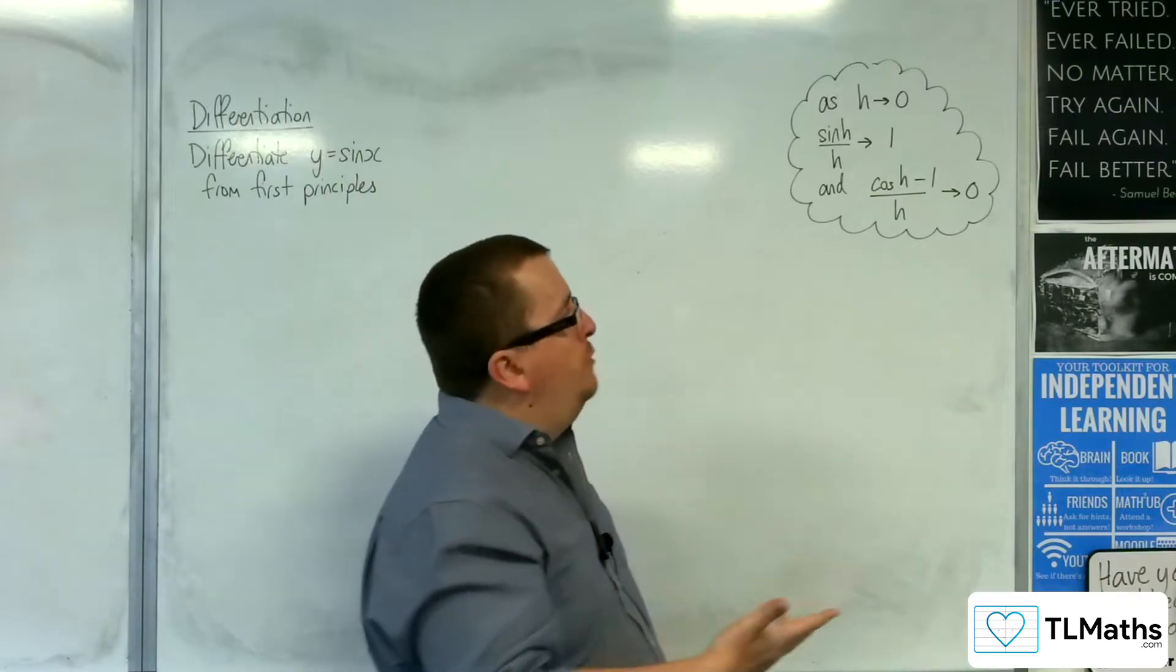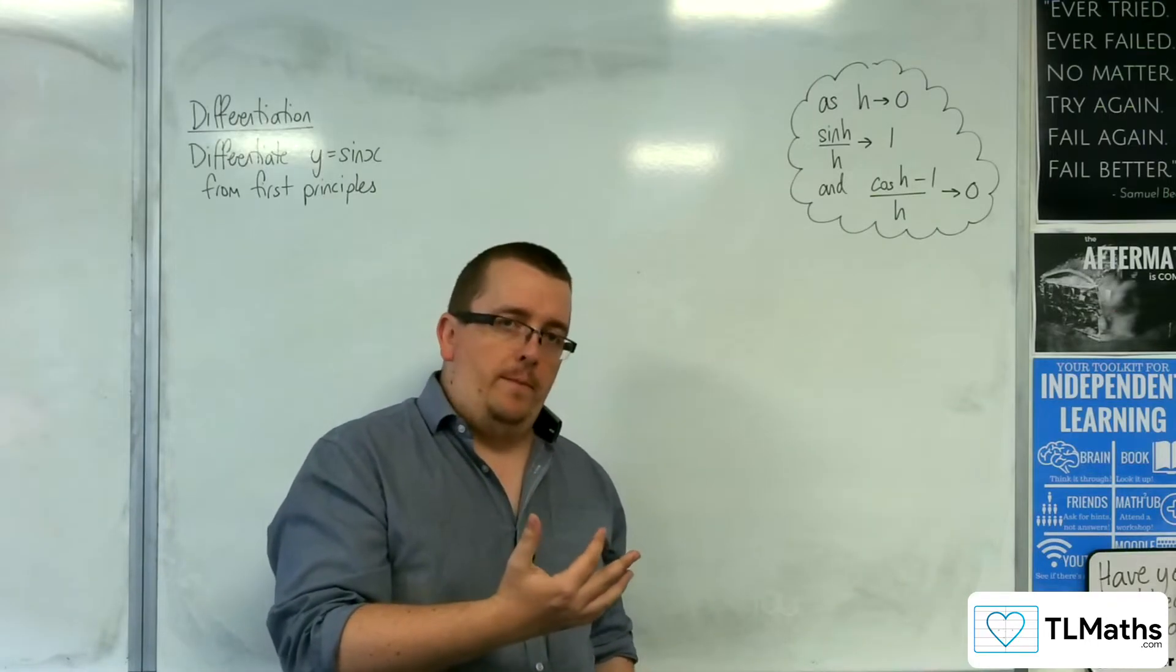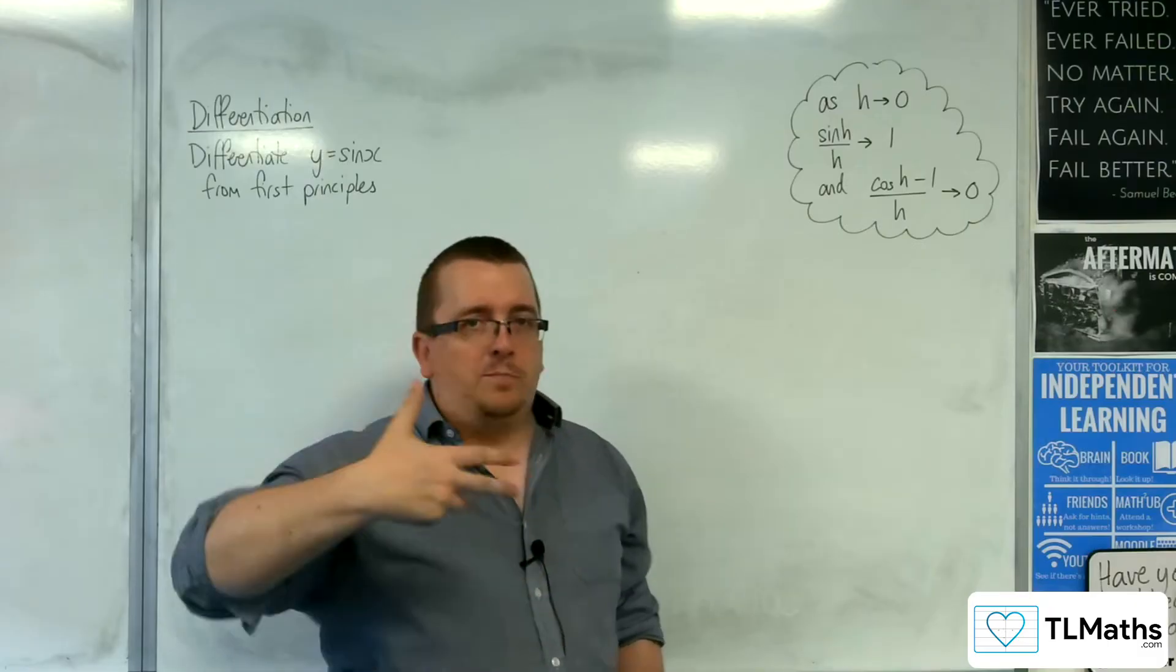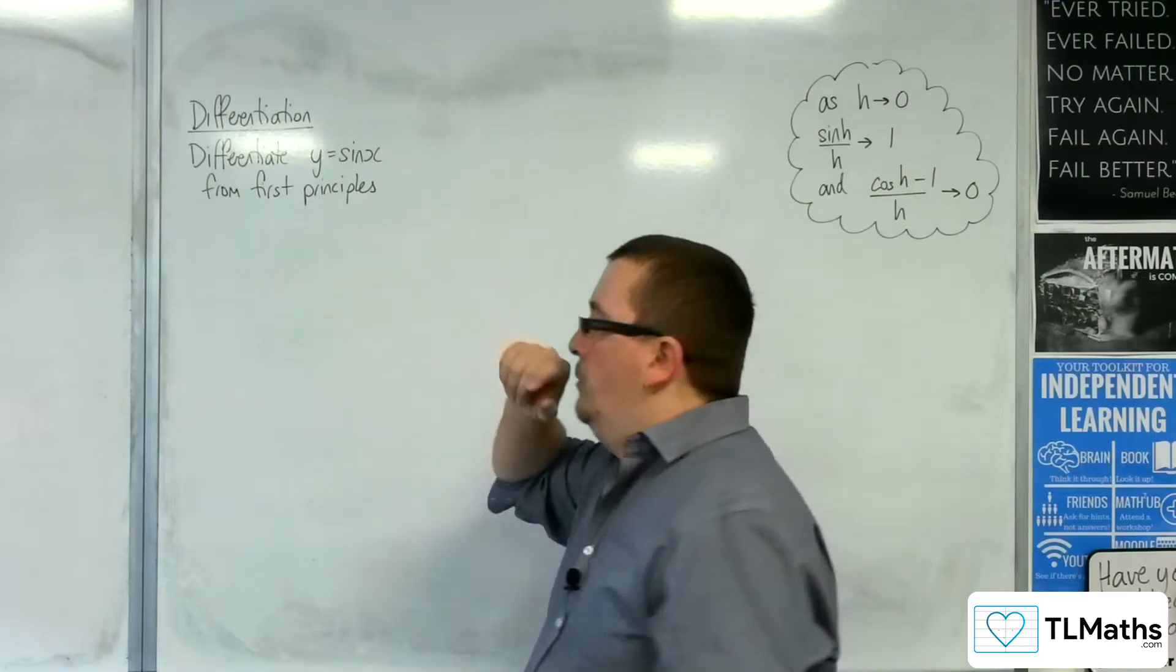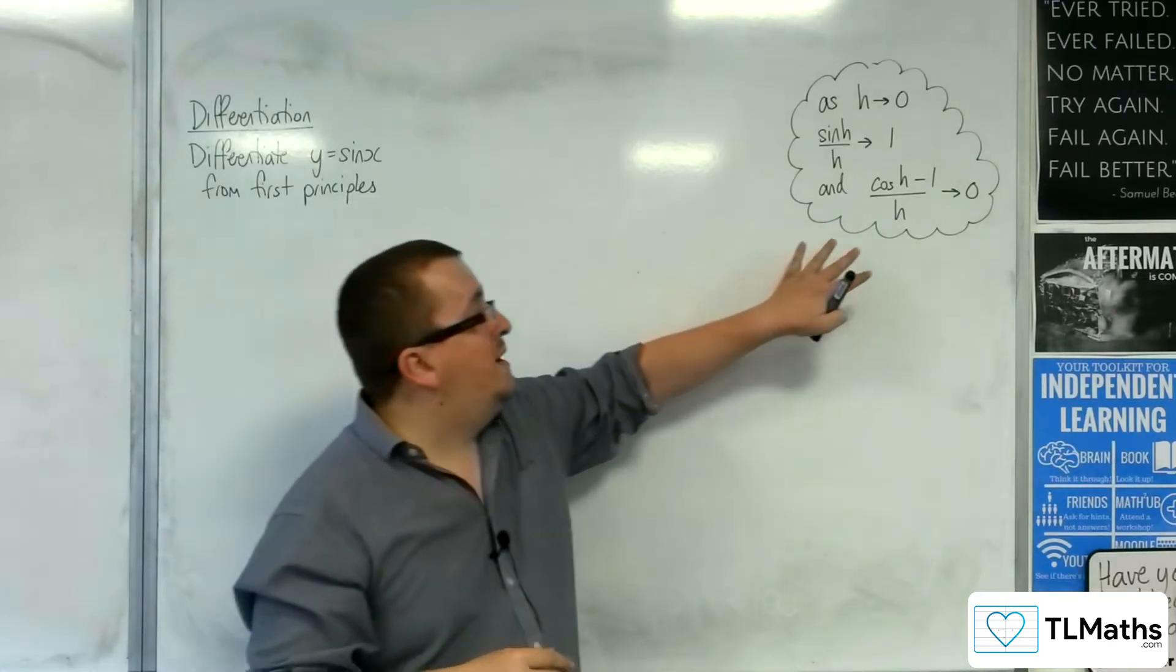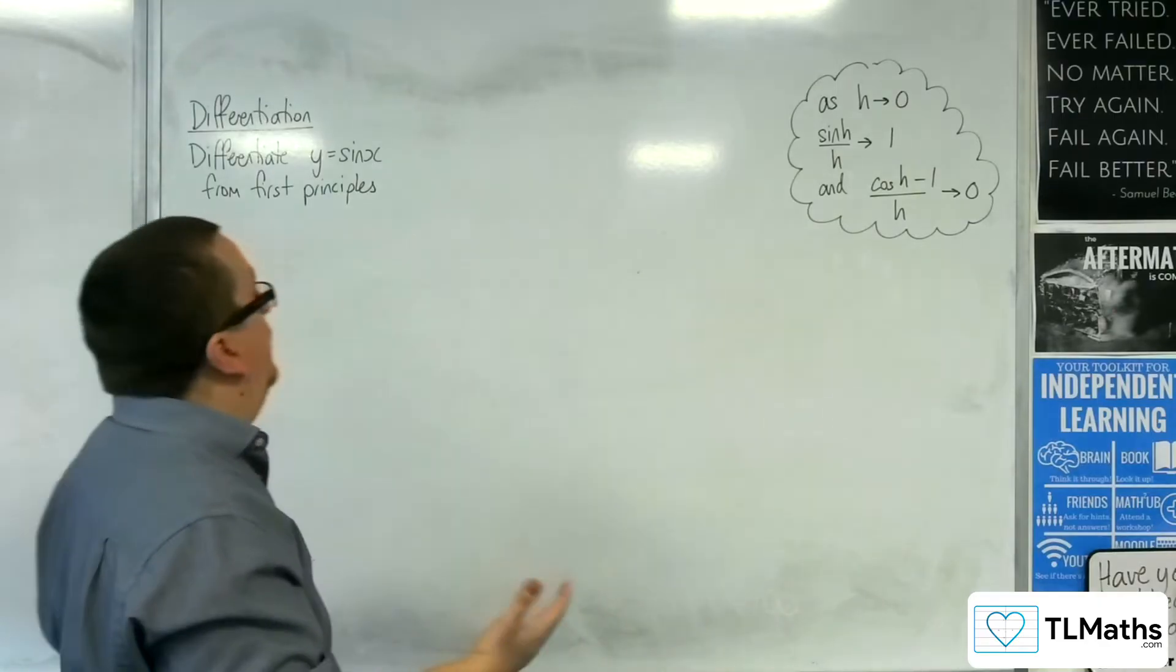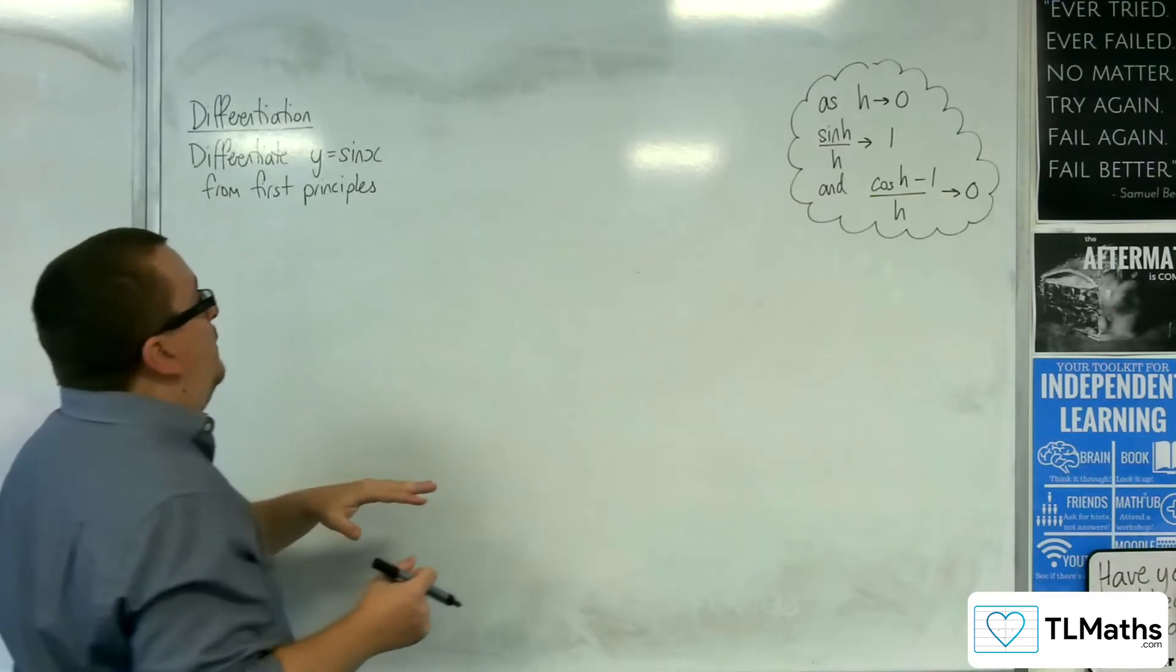To prove those is a little bit beyond our pay grade at this point. So it's really about making sure that you can use those facts as part of the differentiation from first principles. These may be given to you in the exam, and I have seen exam questions already that have told you those. You can use those facts in order to differentiate sine or cosine from first principles. So I'll show you how they get used.